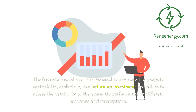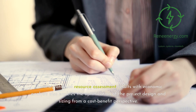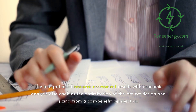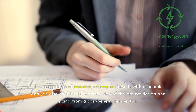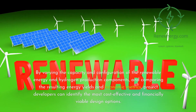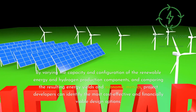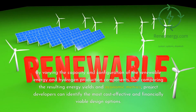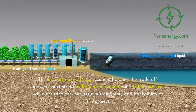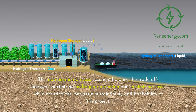The financial model can then be used to evaluate the project's profitability, cash flows, and return on investment, as well as to assess the sensitivity of the economic performance to different scenarios and assumptions. The integration of resource assessment results with economic analysis also enables the optimization of the project design and sizing from a cost-benefit perspective. By varying the capacity and configuration of the renewable energy and hydrogen production components and comparing the resulting energy yields and economic metrics, project developers can identify the most cost-effective and financially viable design options. This optimization process can help balance the trade-offs between maximizing hydrogen production and minimizing costs, while ensuring the long-term sustainability and bankability of the project.